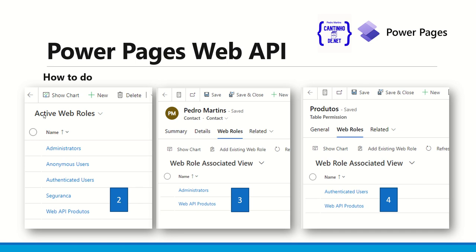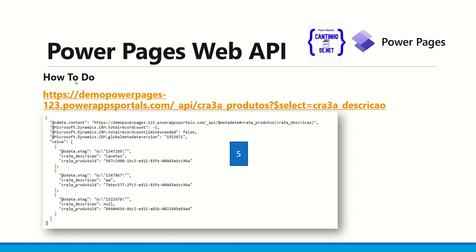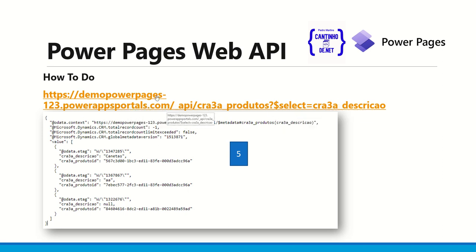If you don't know exactly where to find the schema name, I will show you in the video. The second activity is to activate or create a new web rule, then associate this view to your contacts in the site, and after that put the table permission for the rule you created.